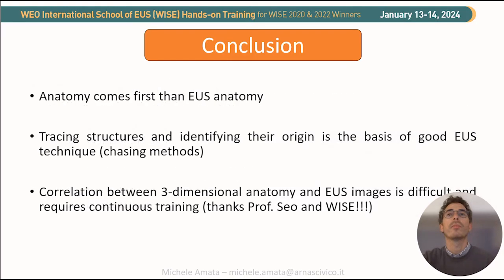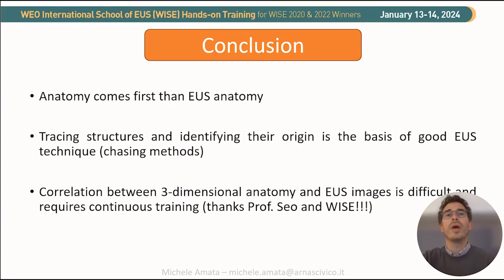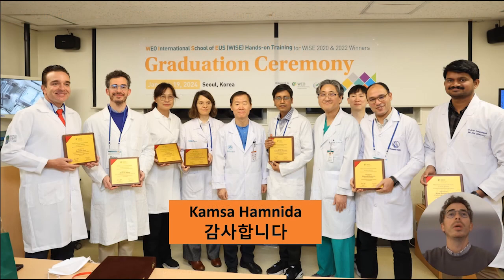In conclusion, anatomy comes first, then US anatomy. Tracing structures and identifying their origin is the basis of a good EUS technique using the chasing method. The correlation between three-dimensional anatomy and US images is always difficult and requires continuing training. Thank you Professor Soh and the WISE organization for the opportunity to be part of WISE. Kansa Hamida — thank you very much for your attention.